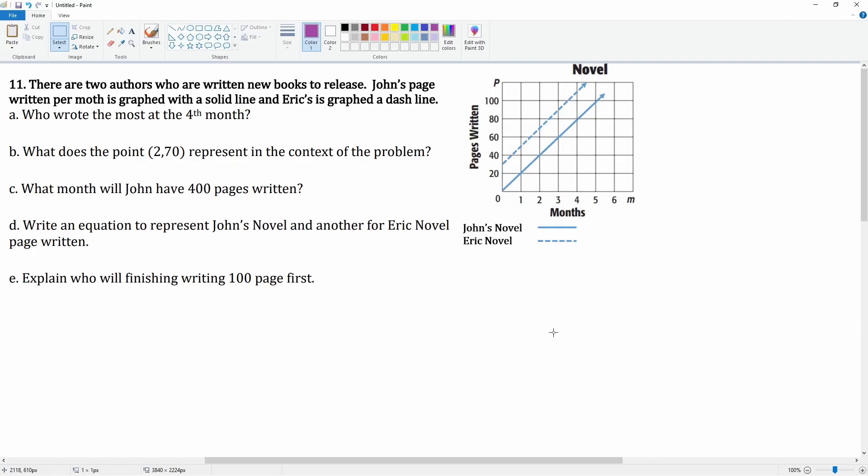Here we have question 11. There are two authors here who are writing new books to be released. John's pages written per month is graphed with a solid line, and Eric's is graphed with a dashed line. It says who wrote the most at the fourth month. Well, let's take a look at where the fourth month is.